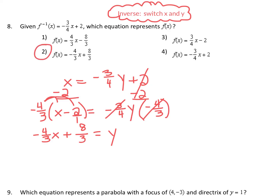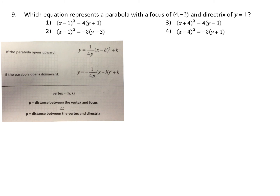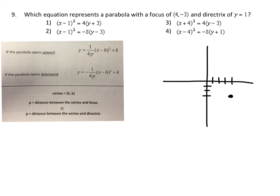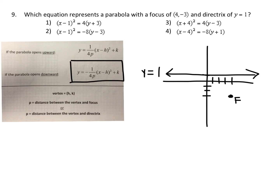We're looking for which answer choice says negative four-thirds x plus eight-thirds — so choice two is our answer. Finally, number nine: they're talking about a parabola whose focus is at (4, −3) and directrix is y equals negative 1. I would first just plot this: focus at (4, −3), so over 4, down 3. The directrix is at y equals 1 — sorry, positive 1. Since the directrix is above the focus, the parabola opens downward, away from the directrix — so we'll use the equation with the negative in front.